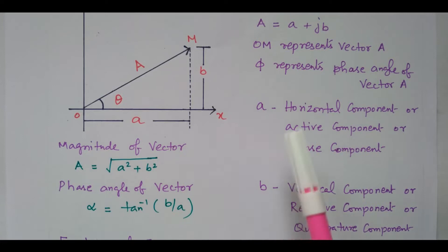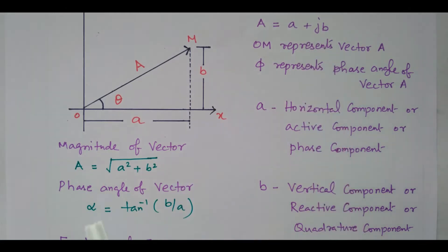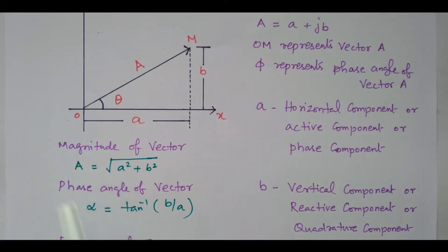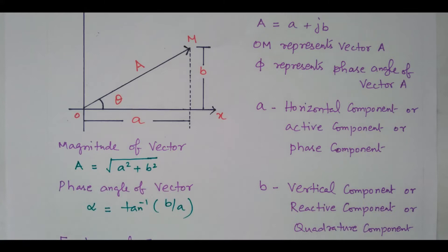That we will also see later. It is a rectangular form and polar form. The rectangular form contains the real term and imaginary term. The polar form contains magnitude and phase angle. How will you find magnitude and phase angle? Square root of A squared plus B squared, and angle is tan inverse B by A.